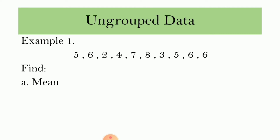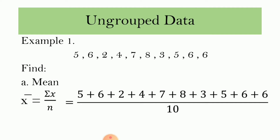First, let us find the mean or the arithmetic average. The mean, which is x-bar, is equal to the summation of x divided by n, where summation of x is the sum of the data and n is the number of data. So the sum of x is 5 plus 6 plus 2 plus 4 plus 7 plus 8 plus 3 plus 5 plus 6 plus 6, divided by 10. That is 52 divided by 10, which is equal to 5.2.